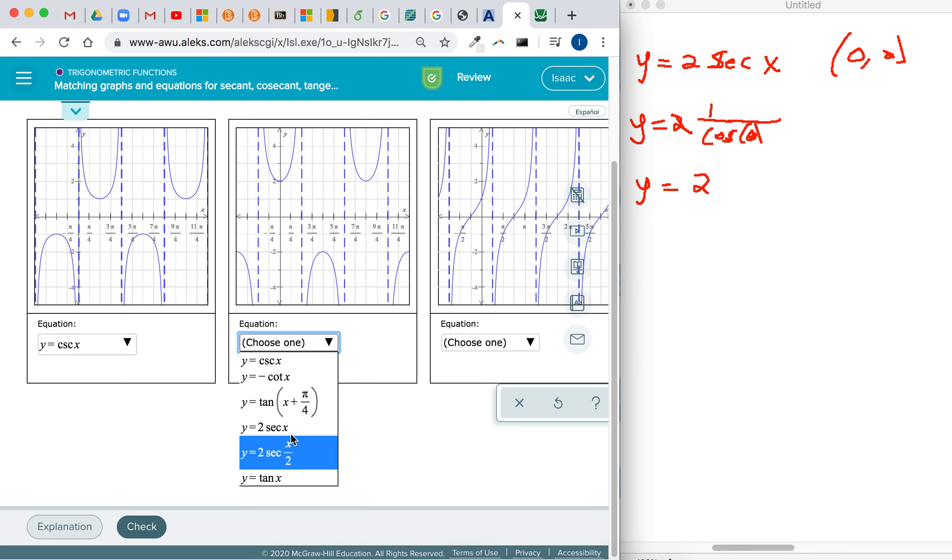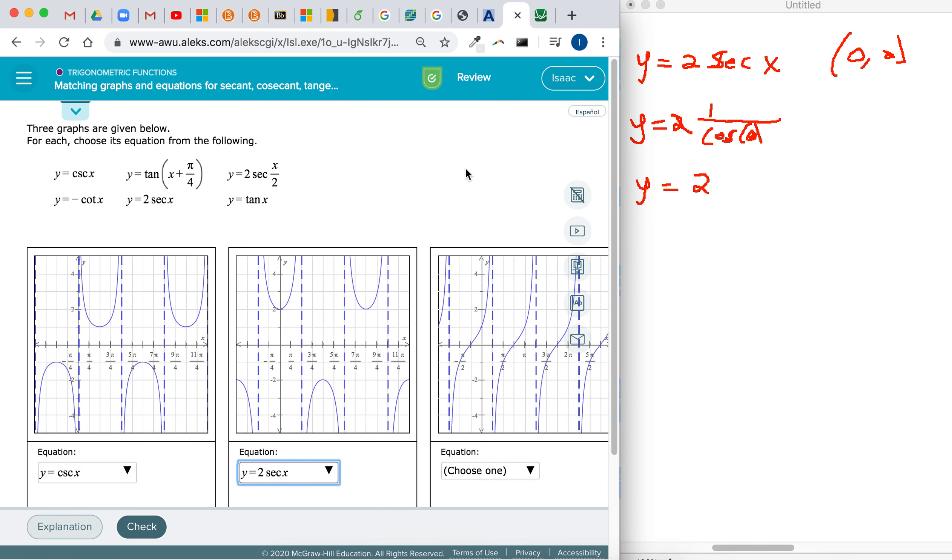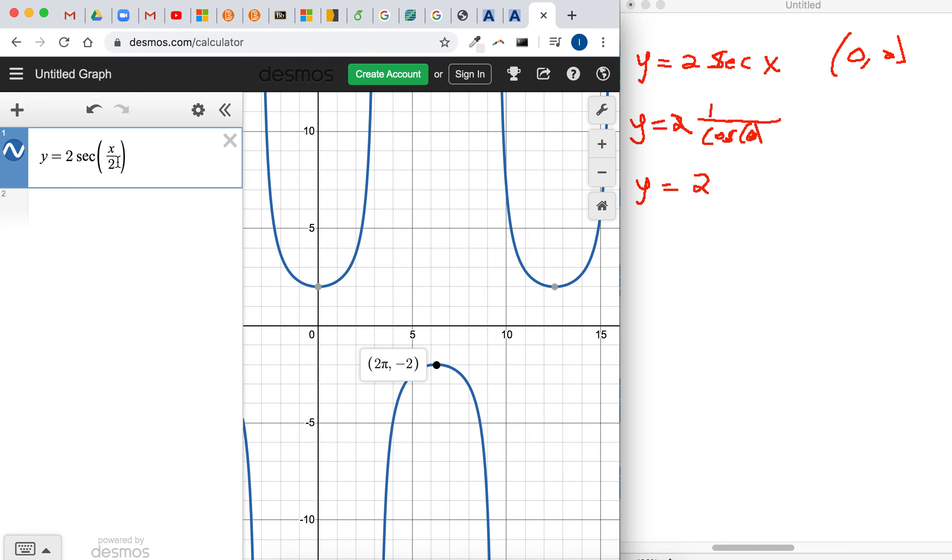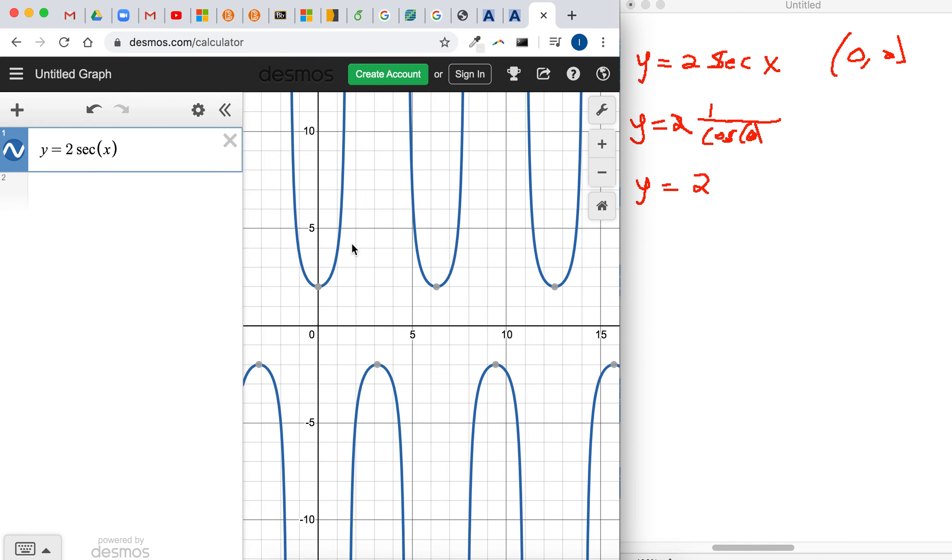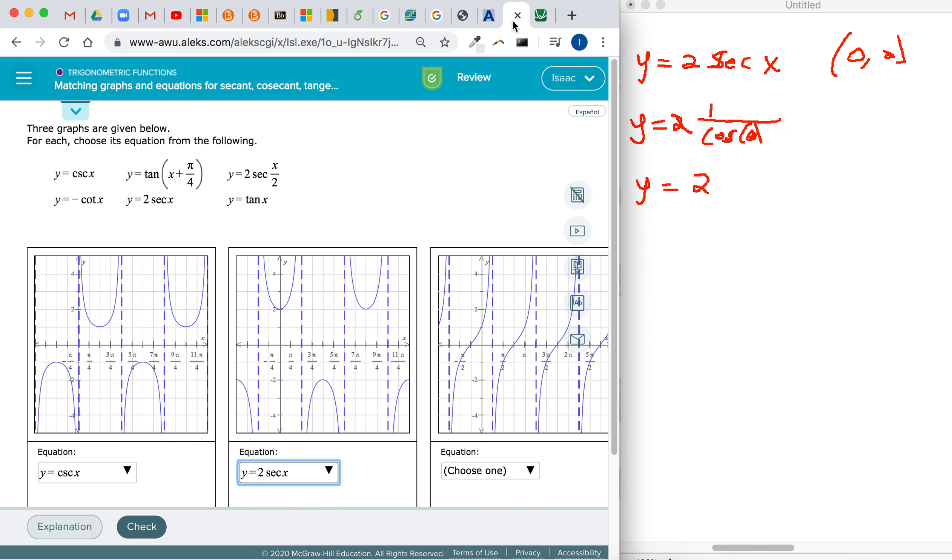And again, just check it with Desmos to make sure. Check out another point. y equals 2 secant x. So it looks like this. So that checks out. And then there it is at π, we've got negative 2.